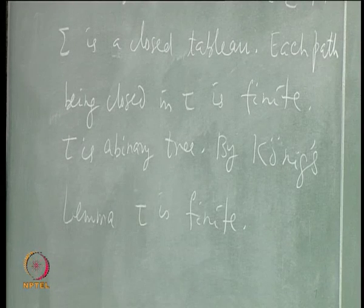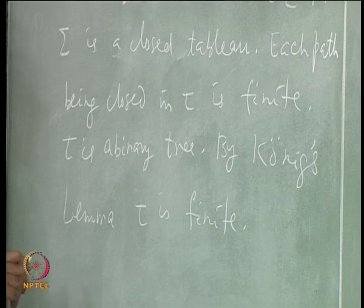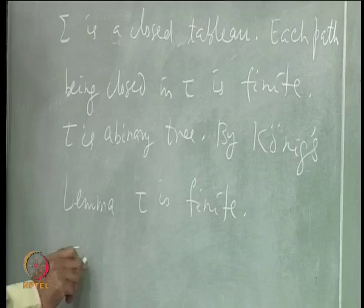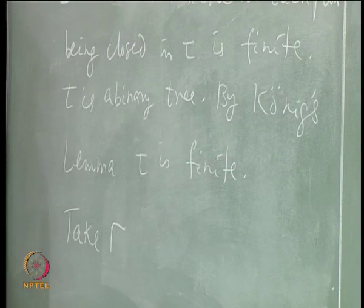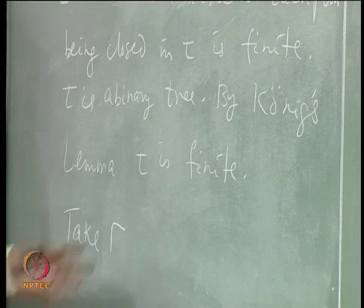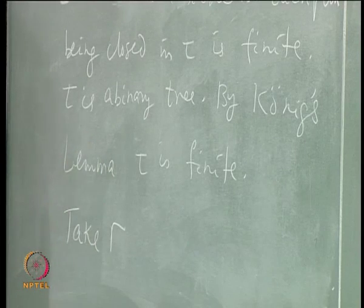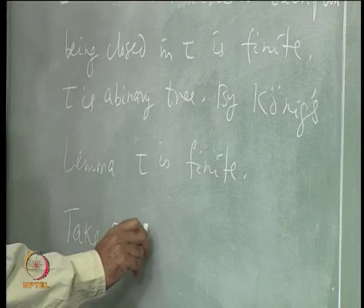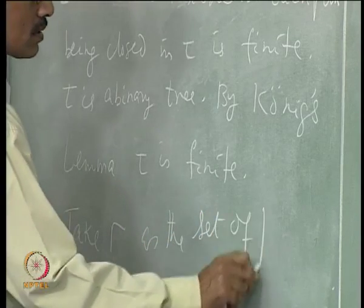So τ being finite means the number of nodes in τ is finite. Once this is done, we have to construct Γ. Take Γ as the set of propositions from Σ that occur in the tableau τ — that is, the intersection of the propositions used in τ with Σ.